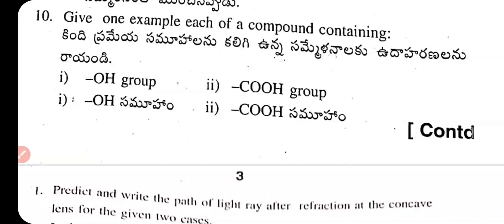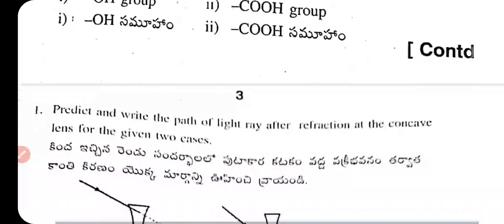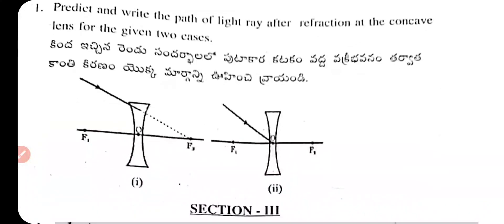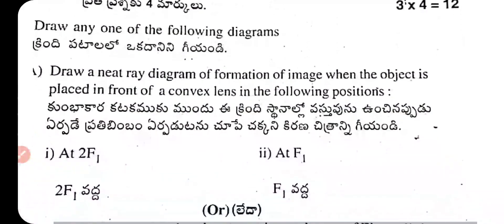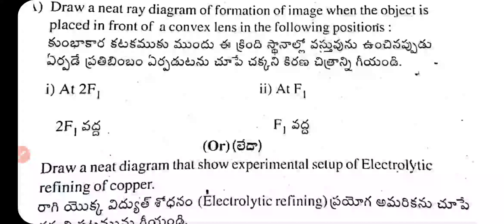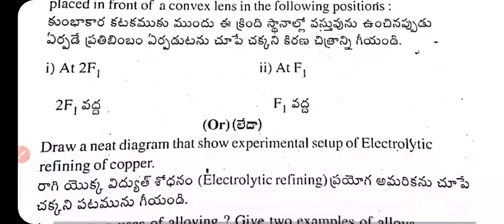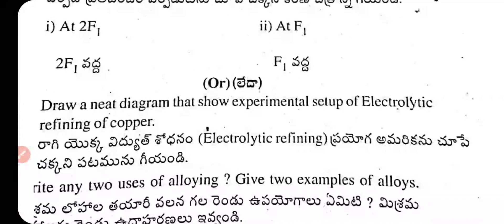Question 11: Predict and write the path of a light ray after refraction at a concave lens. Question 12: Draw a neat ray diagram of the formation of an image when an object is placed in front of a convex lens at 2F₁ and at F₁.